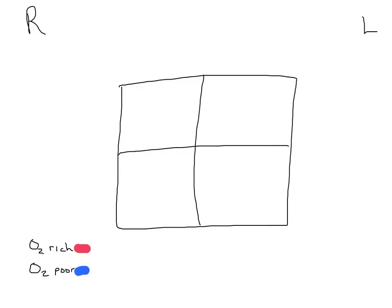Breaking down the chambers further — now that we know which are the atria and which are the ventricles — we can label these as the left atrium, the left ventricle in the lower right, the right atrium, and the right ventricle.